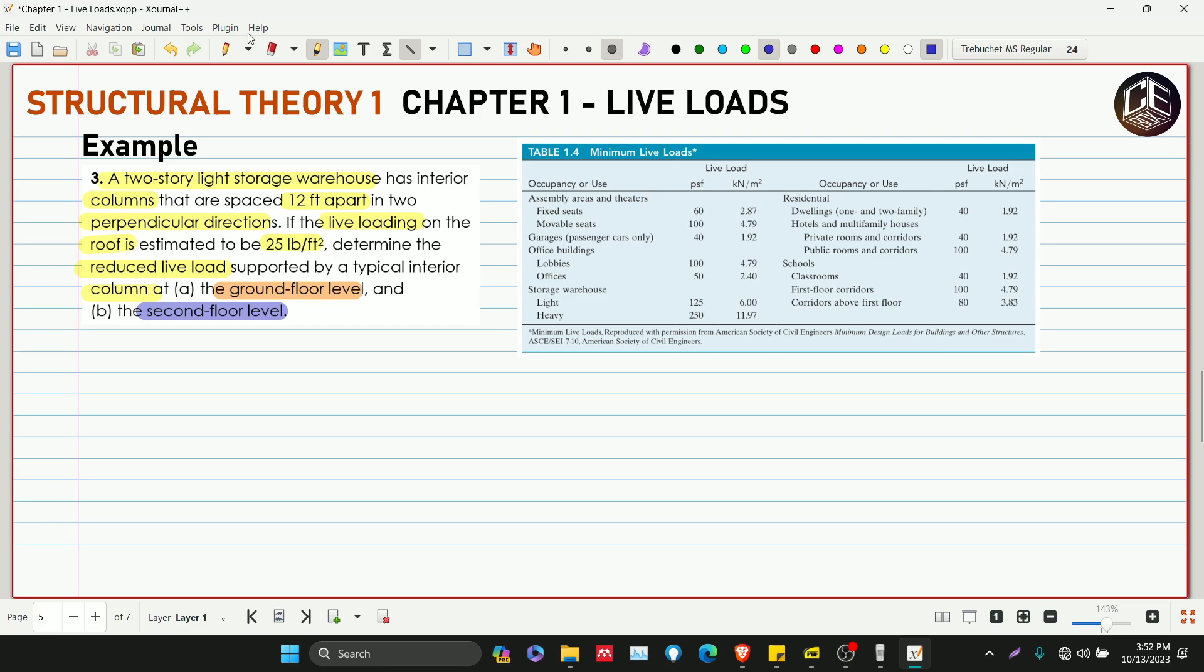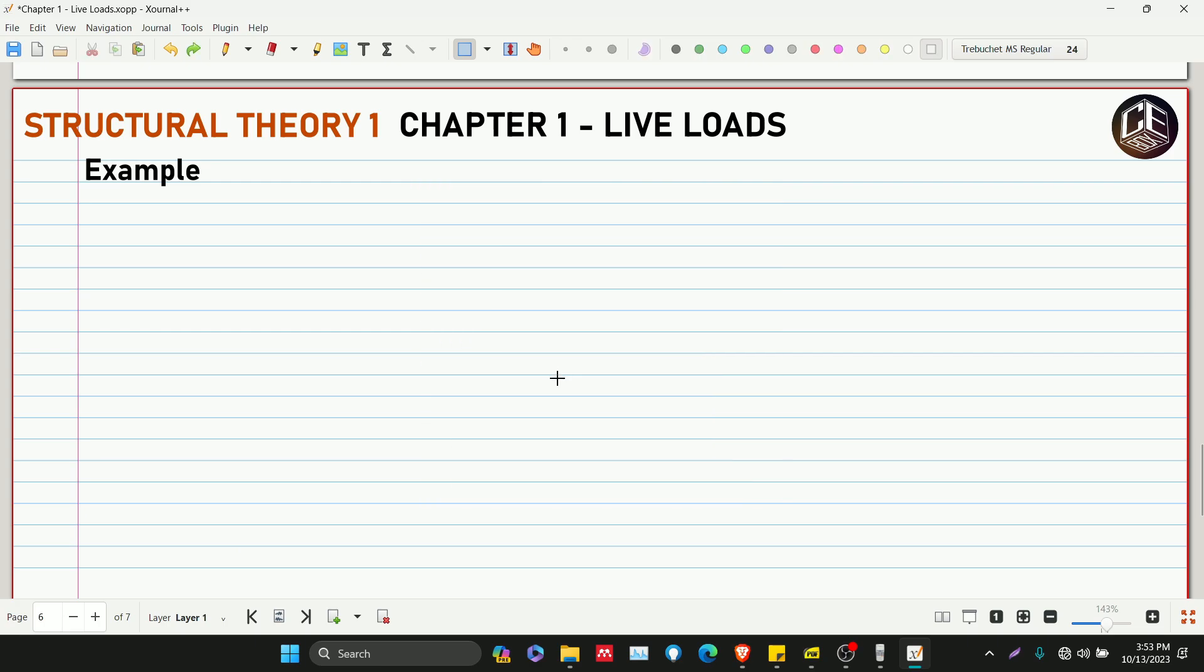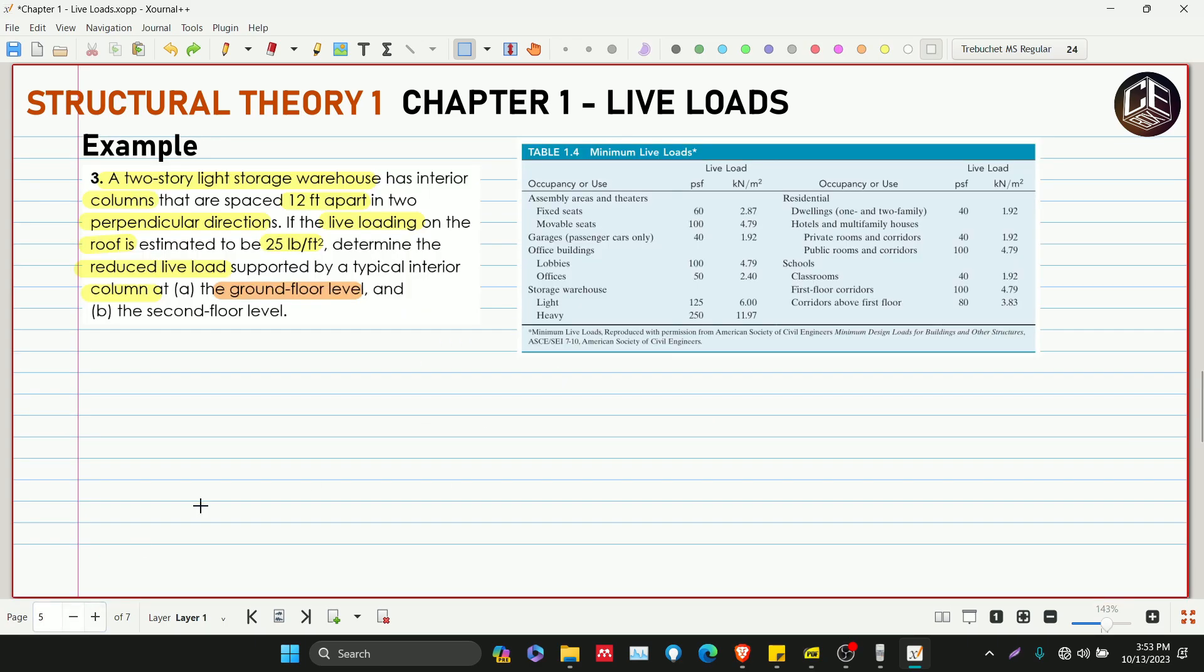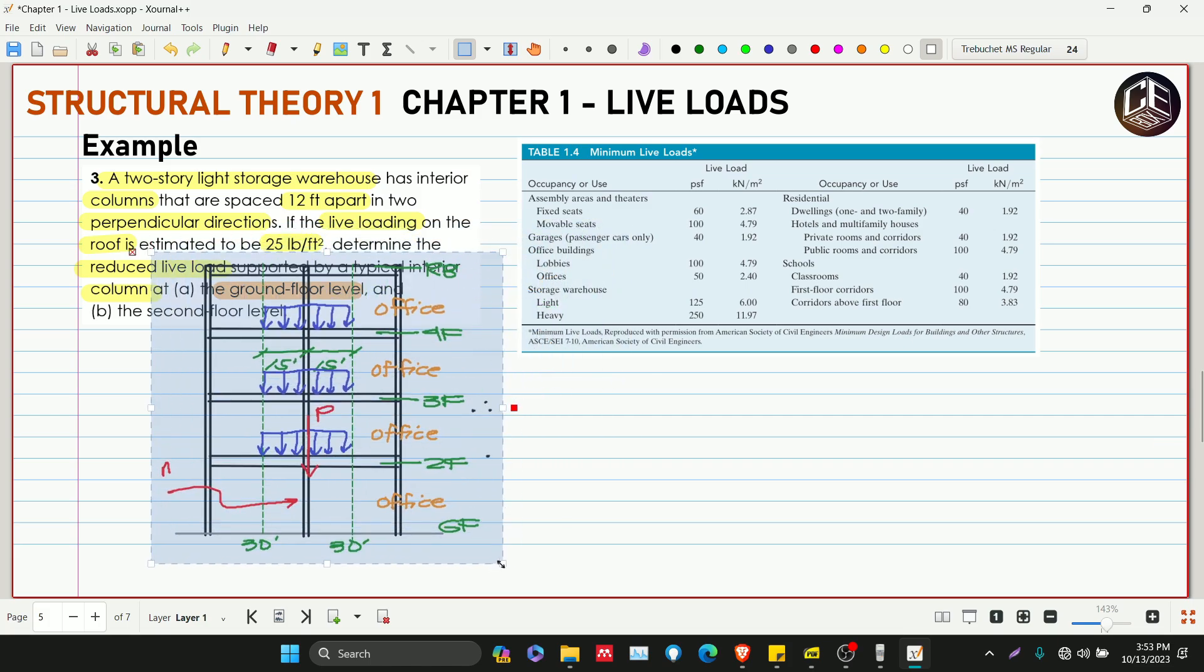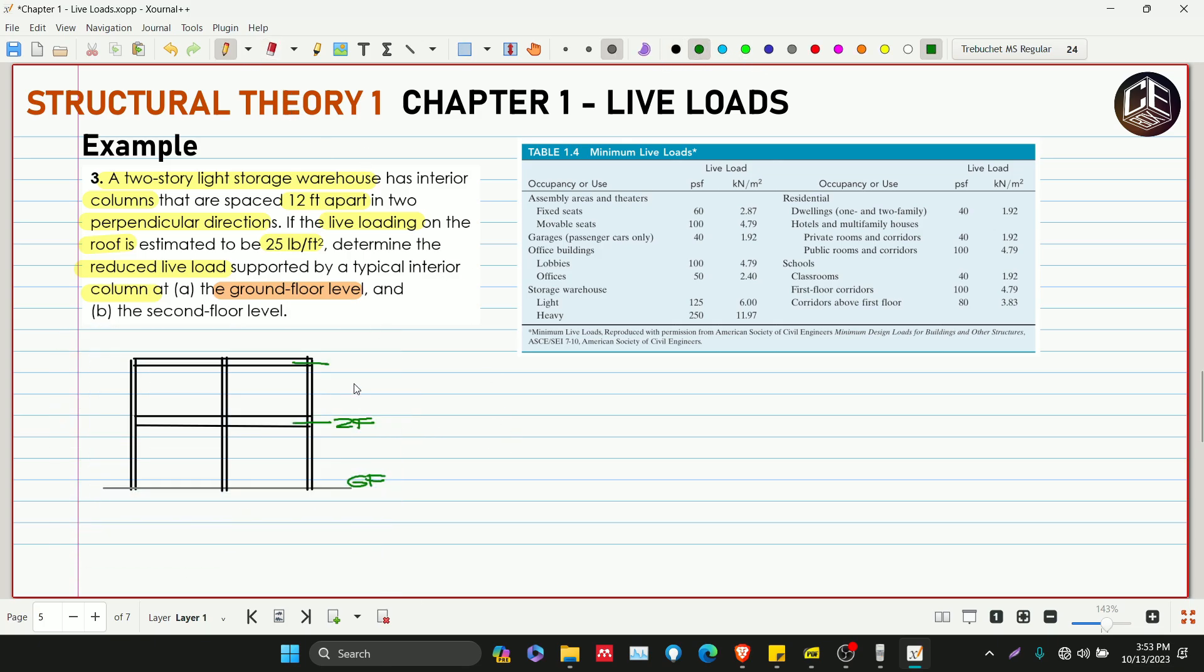So siguro gamitin na lang natin itong ano sa ating problem number two yan. So ito yung ating building. This is ground floor, second floor, and then yung ating roof beam level. So dito sa roof beam down natin andito yung ating loadings na 25 pounds per feet squared.